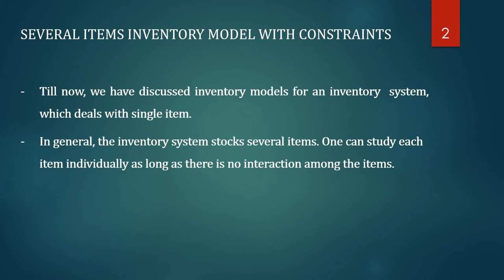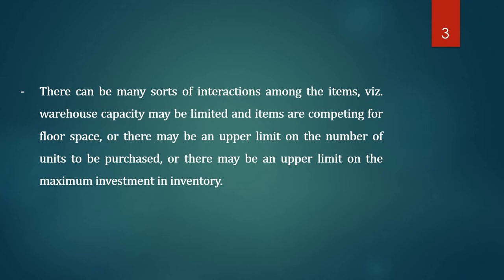The classical EOQ model — whether with shortages or with finite or infinite replenishment rate — deals with a single item in general. However, real inventory systems stock several items. For example, a shopping mall or grocery shop has a huge number of items, and even a kitchen stocks several items. Each item can be studied individually as long as there is no interaction among the items, but there can be many sorts of interactions.